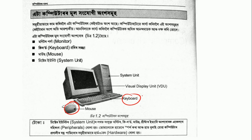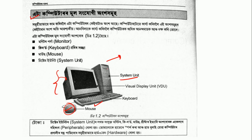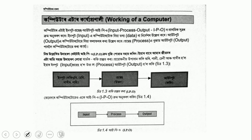The keyboard, Visual Display Unit (VDU), and system unit are key components. You need to use the peripheral device, output device, and input device. If you need to use the task, you need to use the hardware. The computer is working with hardware.